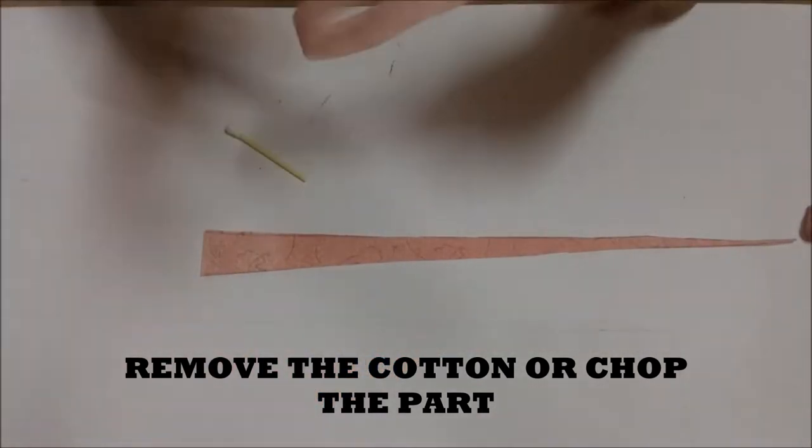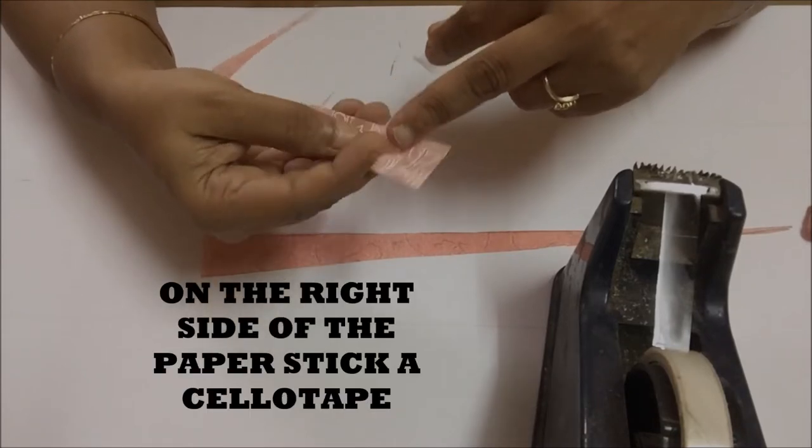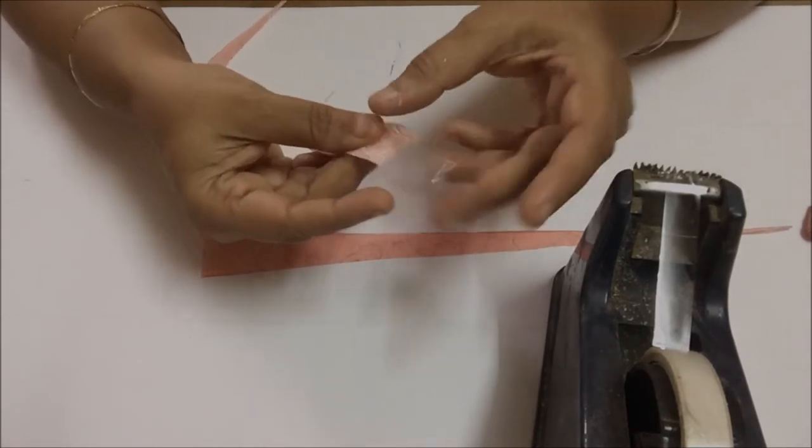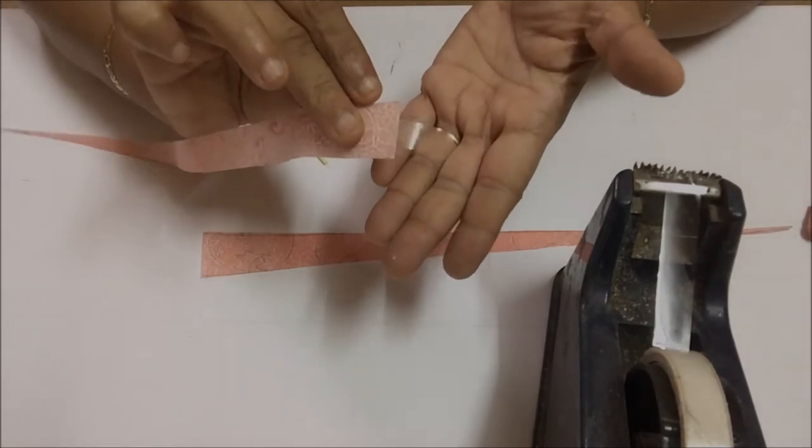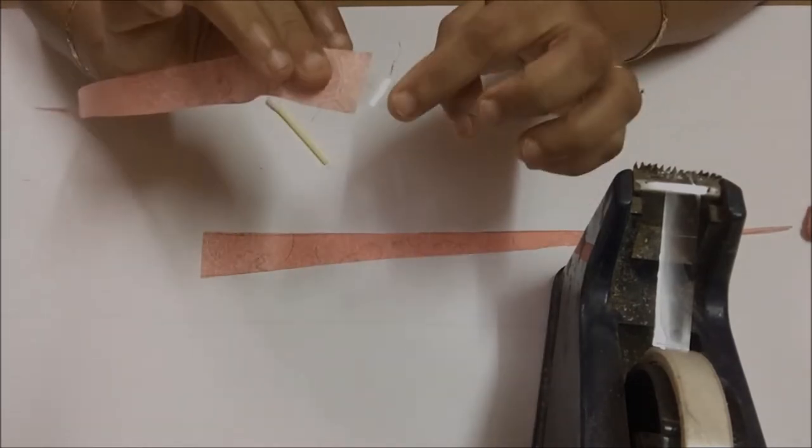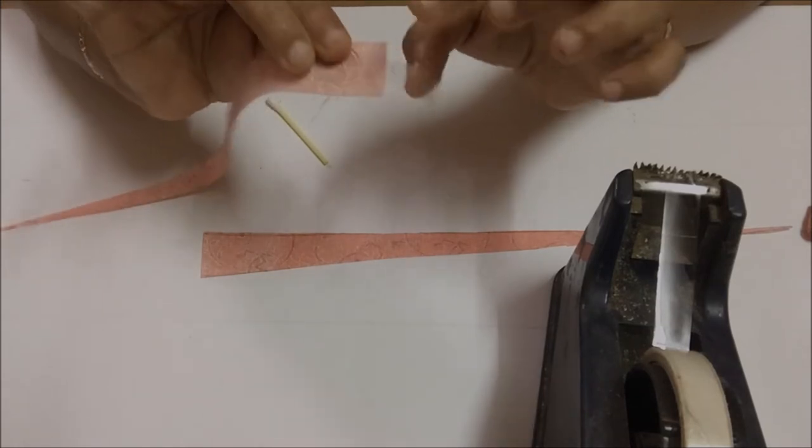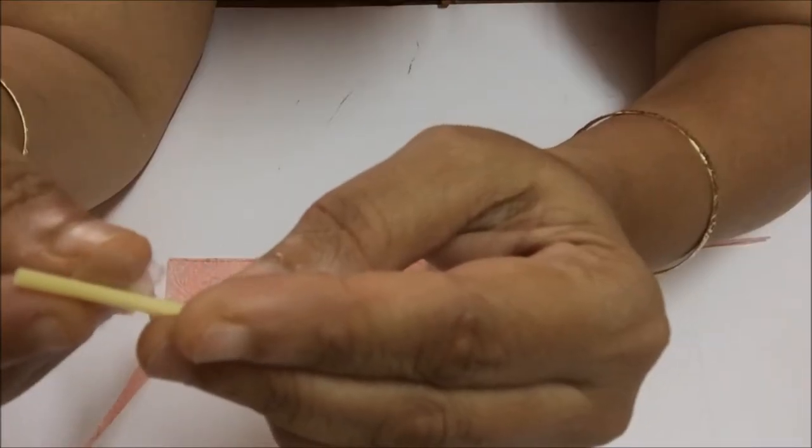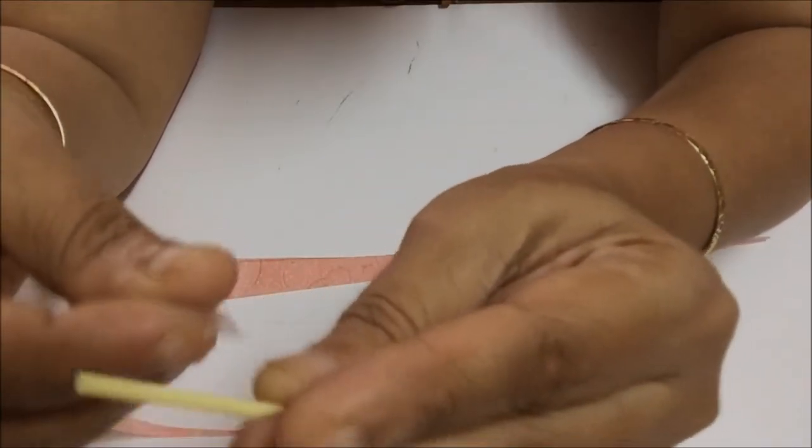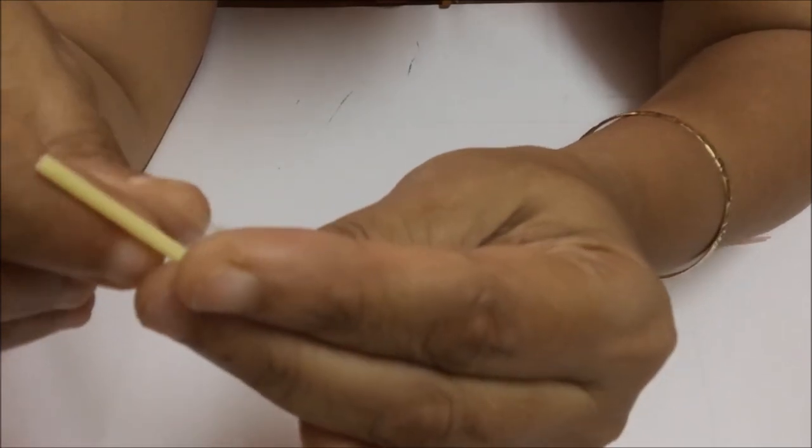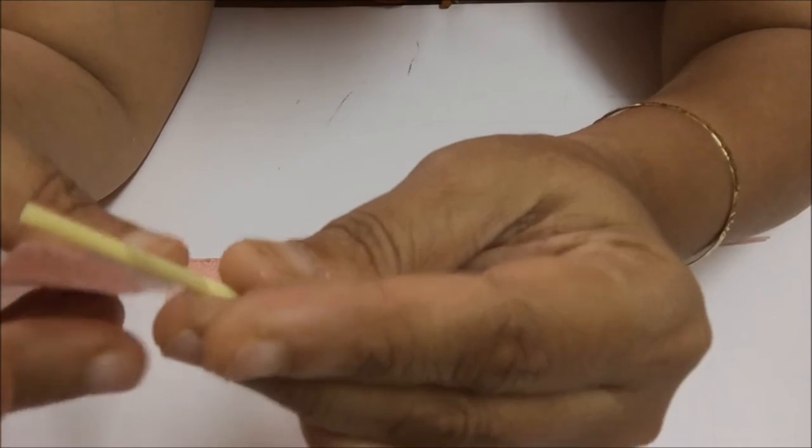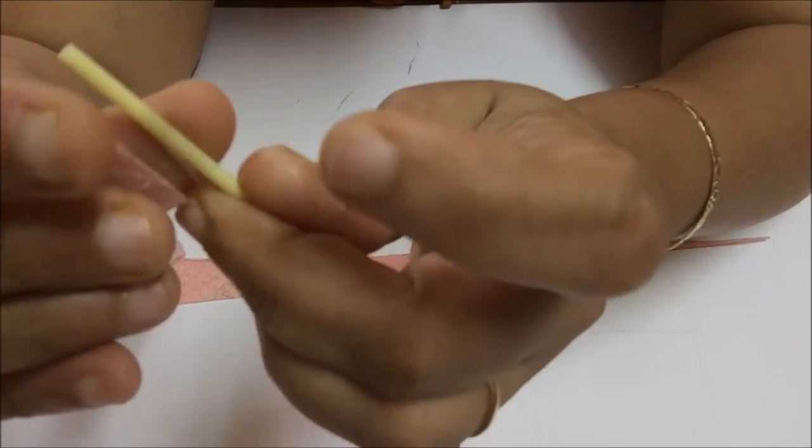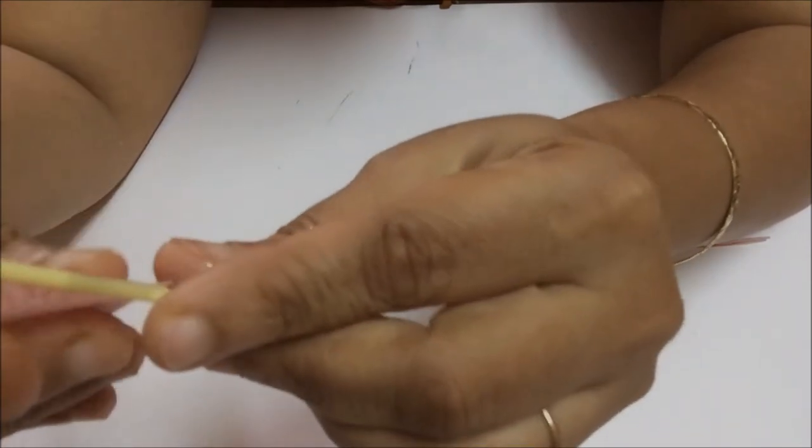Take one strip on the design side and tape it. Leave some portion. The wrong side has got the sticky portion. Now stick the sellotape like this to the earbud and start rolling.